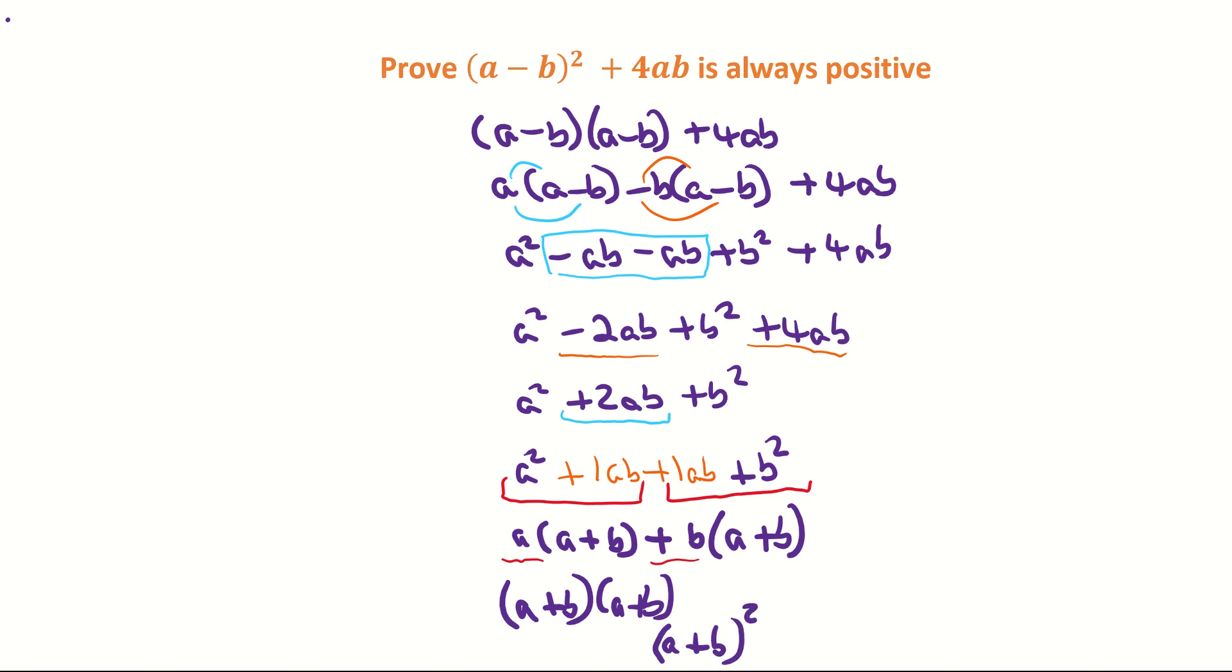And we're finished now because the question wanted us to show why this is always positive. Well think about it like this: anytime you square something it's always going to give you a positive answer. So it doesn't matter if what's inside the bracket is a negative, it's always going to give you a positive solution. So that's it proved.